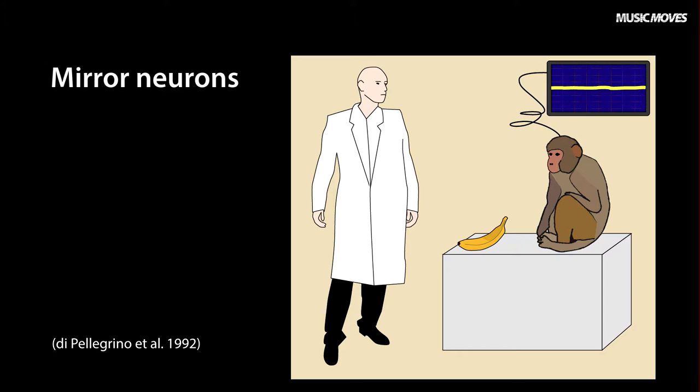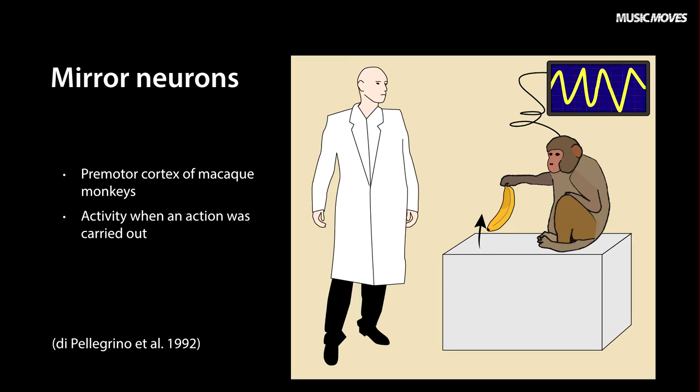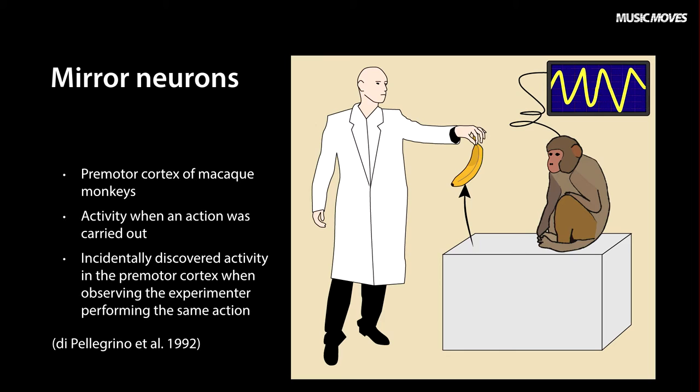A group of researchers in Parma, Italy, were studying activity of the premotor cortex in the brain of macaque monkeys. Previously activity had been found in the premotor cortex whenever a monkey did certain types of planned action, such as picking up an object. Incidentally, during a break in the experiment, the researchers observed activation in the premotor cortex of the monkey, when the monkey sat stationary, watching the experimenter perform the same action.